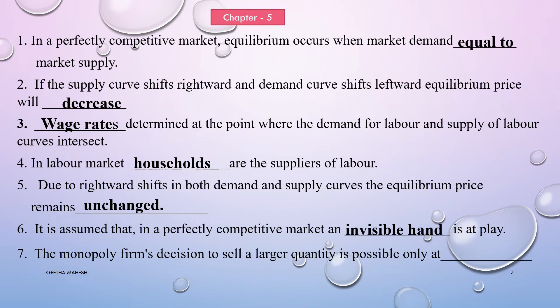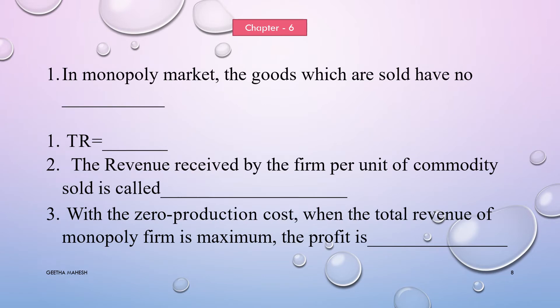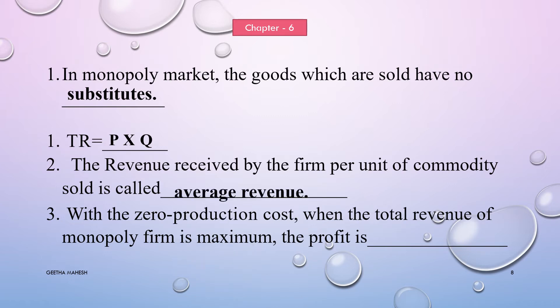The monopoly firm's decision to sell a large quantity is possible only at lower prices. Let us discuss a few important fill in the blanks from non-competitive markets. In a monopoly market, the goods which are sold have no substitutes. TR equals P into Q. The revenue received by firms per unit of commodities sold is called average revenue. With zero production cost, when total revenue of a monopoly firm is maximum, the profit is maximum.